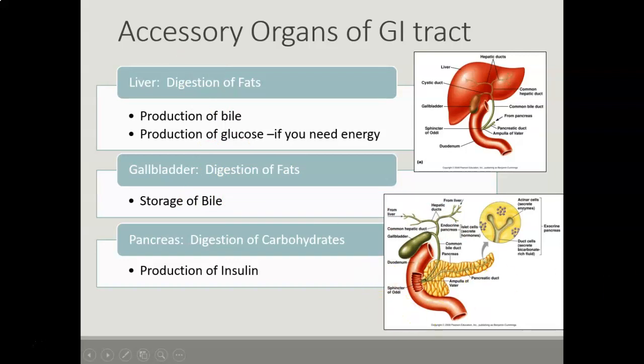For the pancreas, almost 95% of the pancreas consists of exocrine tissue, which produces enzymes for digestion and regulates pancreatic secretions. The remaining 5% is endocrine tissue. There are cells called the islets of Langerhans — clusters of cells that kind of look like grapes — and they produce two hormones. One is insulin, which helps to lower our blood sugar, and the other is glucagon, which helps to raise our blood sugar. Insulin acts as a key to get the glucose into the cells.